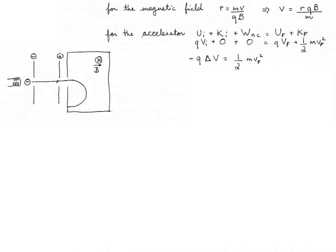Let's quickly check that the left-hand side of the equation is actually positive. We know that it is because the charge of the particles is negative and delta V is positive: V_final is the high potential plate and V_initial is the low potential plate. Now we are going to replace v_final with RQB over m. When that is squared, it becomes R squared, Q squared, B squared over m squared.